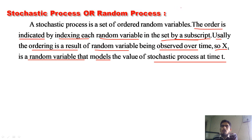For example, a coin is tossed two times. So the sample space when you toss a coin twice is: HH, HT, TH, TT.